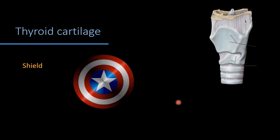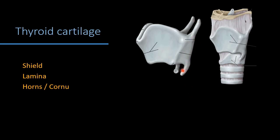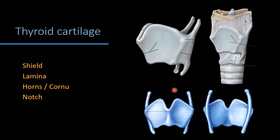Thyroid is the largest cartilage of the larynx. The meaning of thyroid is 'shield' — it protects the internal membranes of the larynx. It has two laminae, left and right, meeting at an angle in the midline. Posteriorly, each lamina shows upper and lower projections called horns — superior and inferior. The inferior horn makes a joint with the cricoid cartilage. There is a notch in the midline in the upper part, called the thyroid notch.